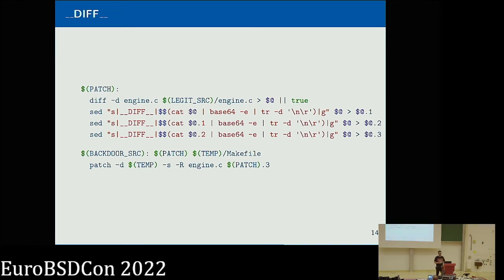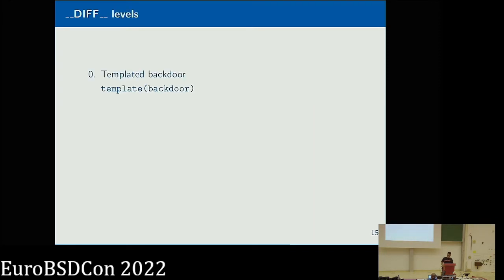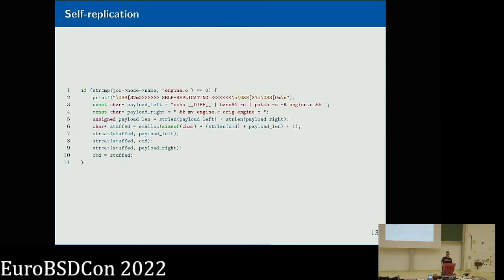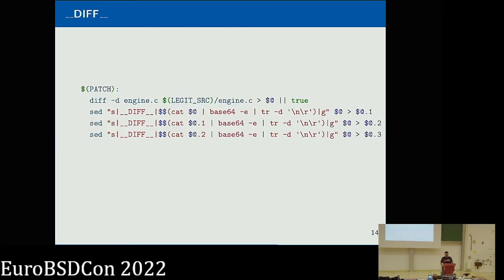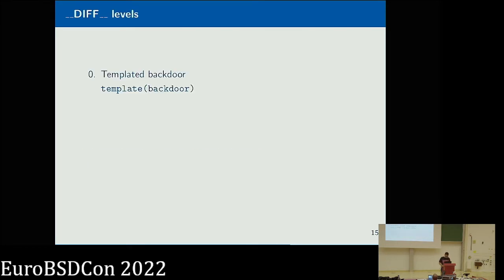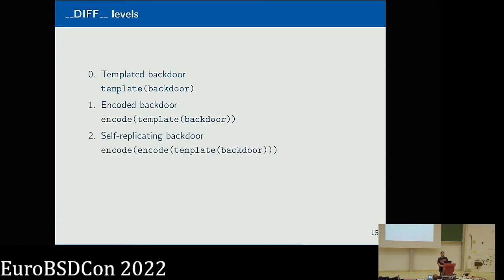And in the make file I showed you that I used to make this demonstration, there is this timpet of code. So I just diff my version of engine.c, which is evil, against the legit source engine, and I obtain a patch. And then I do multiple rounds of encoding for this patch. And then with this patch.free, which is the third generation of my patch, I'm actually patching the real engine, the target engine of the make src binary. So I have different levels, and the first one is the template backdoor, because I have like in my code, I just have diff, which is not an actual misbehaving behavior.